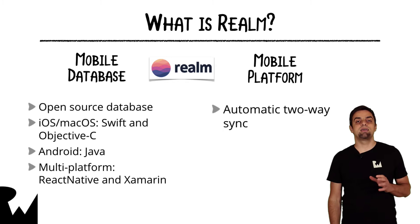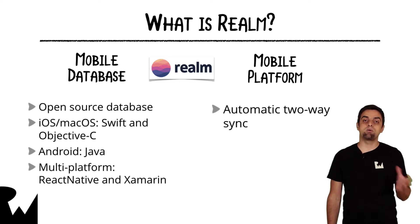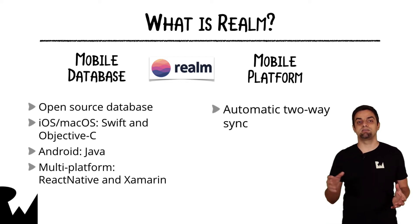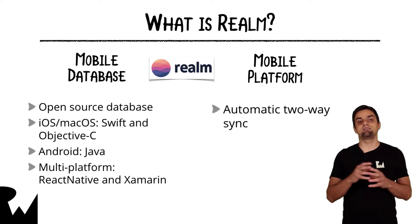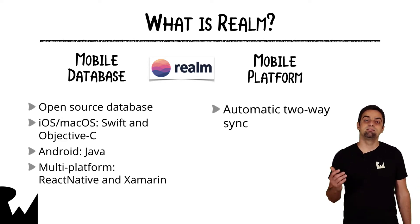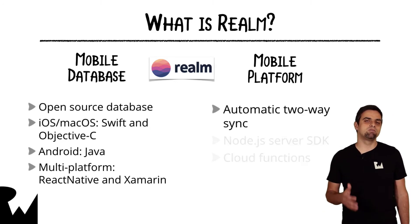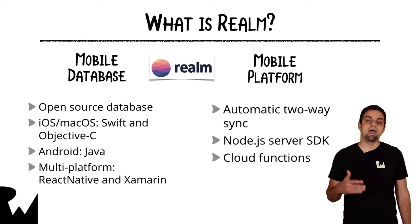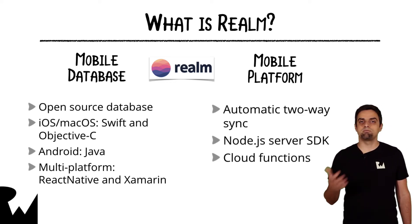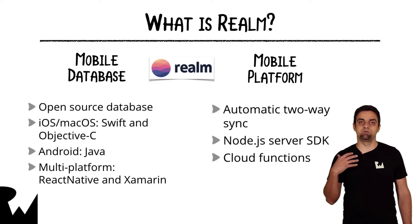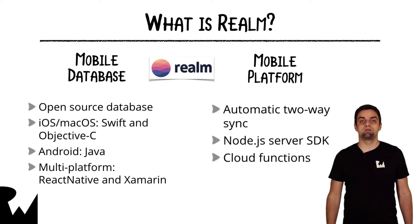The Realm Mobile Platform is a server and component that allows synchronization of data between client devices. So if you have a database on your iOS app and a database in your Android app, you can synchronize data between both via the Realm Object Server, which is part of the Realm Mobile Platform. It comes with an SDK for Node.js, so you can add custom logic on your server — open your Realm file on the server, adjust values, react to events as people use your apps, and so forth.